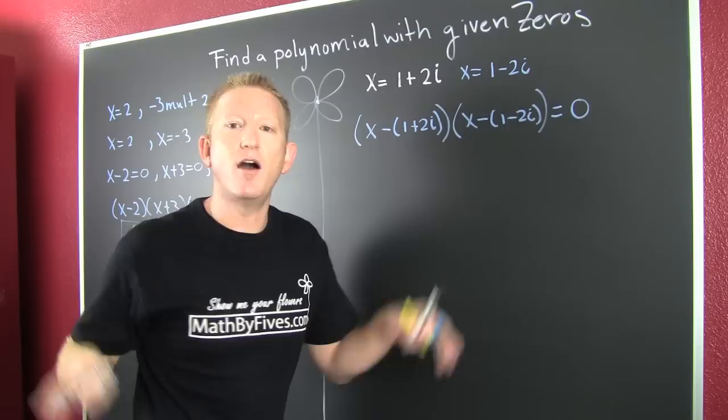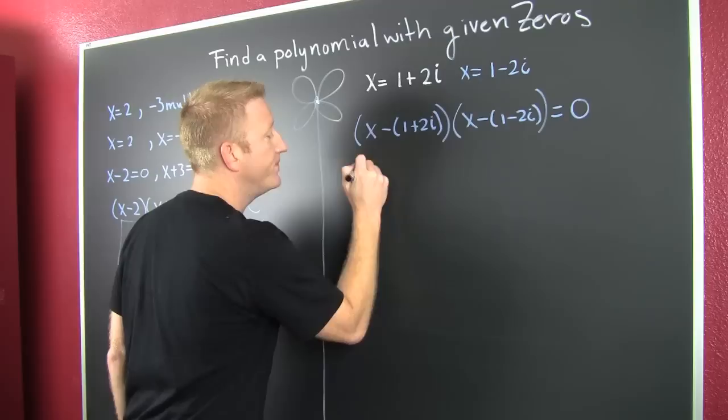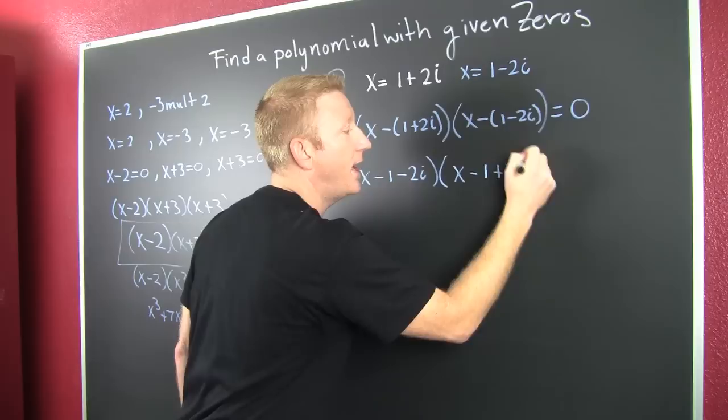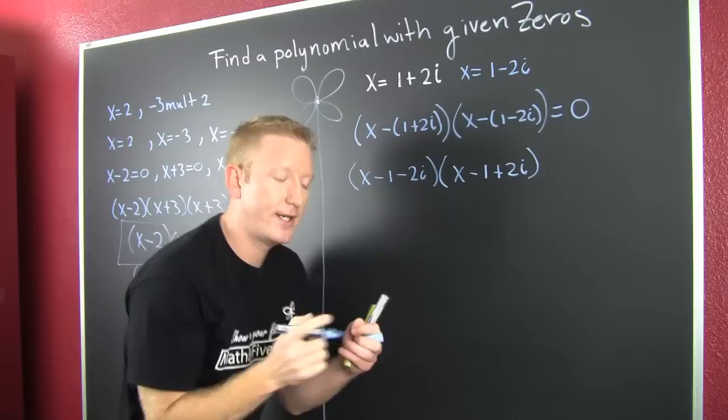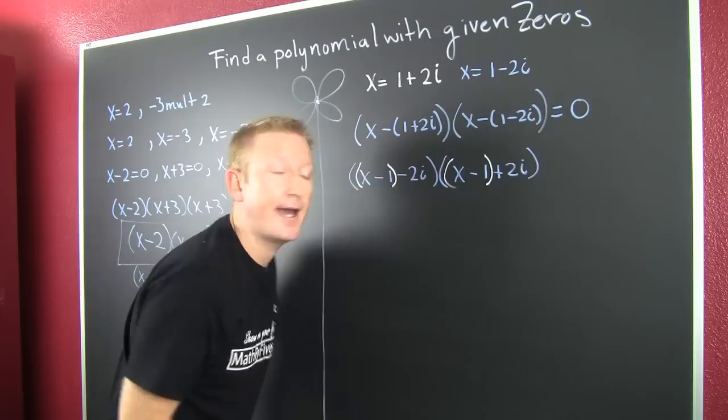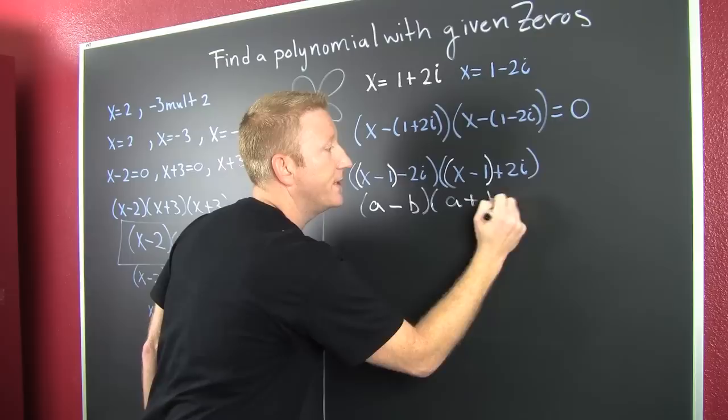So then, here's what I recommend you do. This is tricks. We call it x minus one minus two i. And then, this is x minus one plus two i. Now, here's what I want to do. I want to use some fancy grouping. I want to group these two. And you're like, why? Because then you have the difference of squares.